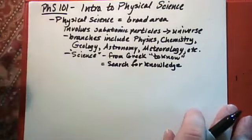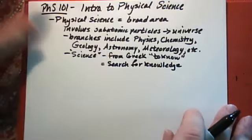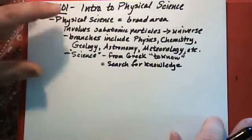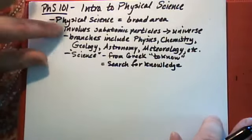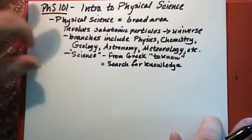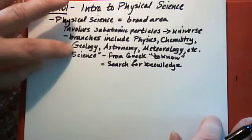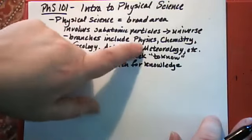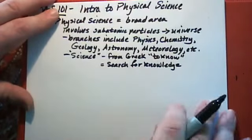Physical science is actually a very broad area and it studies everything, non-living anyway, going from the smallest subatomic particles to the entire universe. In fact, actually physics involves just that. Branches of physical science would include things like physics and chemistry and geology, the study of the earth and rocks, astronomy, study of the stars, sometimes considered a branch of physics, but not always, meteorology, the study of the weather, and other stuff like that.